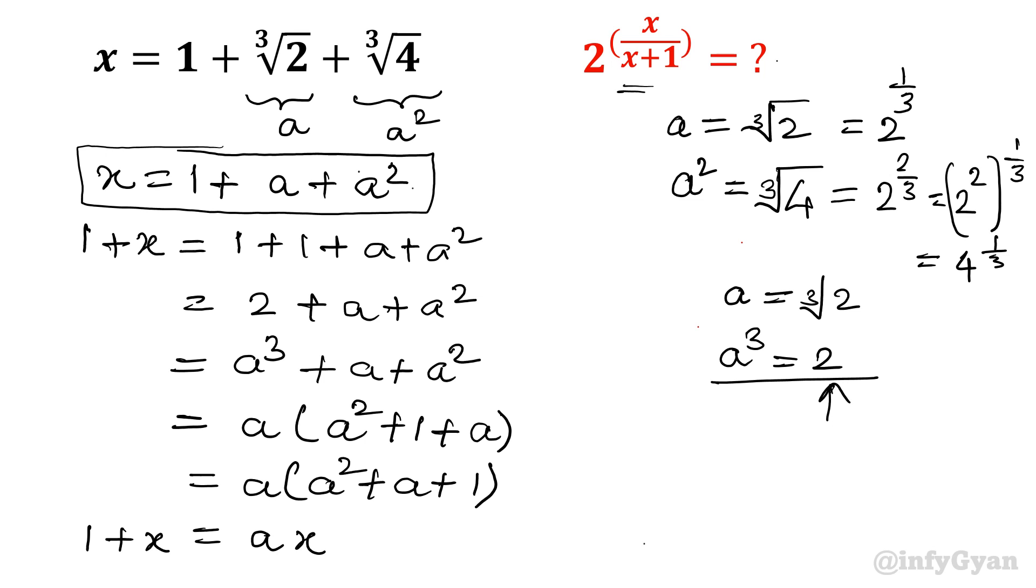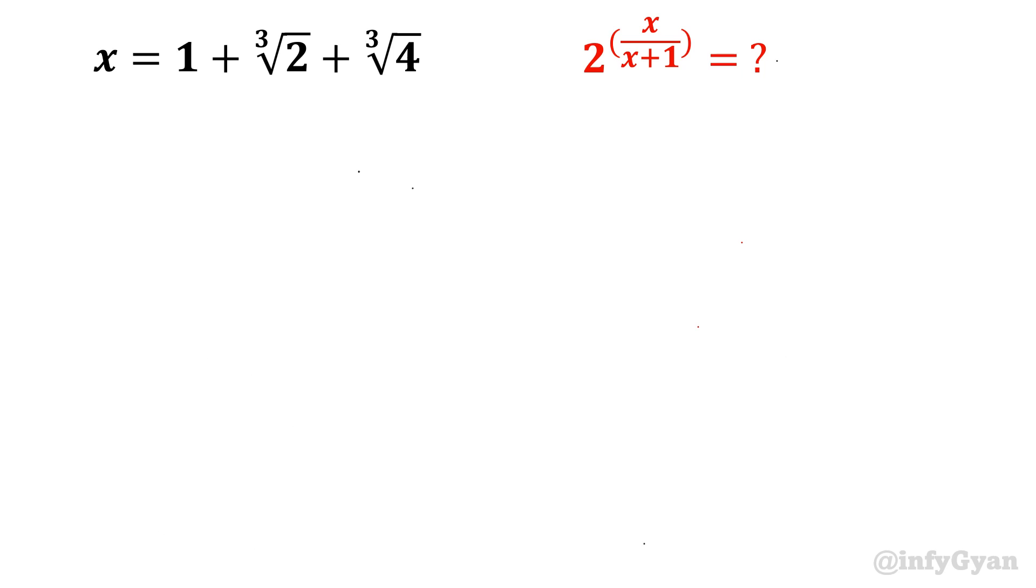So let us find out x over x plus 1 from here. 1 plus x is equal to a times x. Divide both sides by 1 plus x. So it will become 1 is equal to a times x over x plus 1. So x over x plus 1 will become 1 over a. Let us put back the value of a. a was cube root 2.